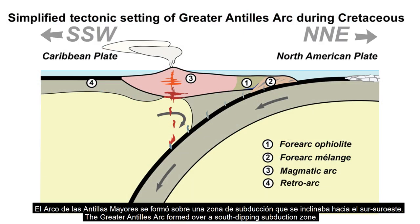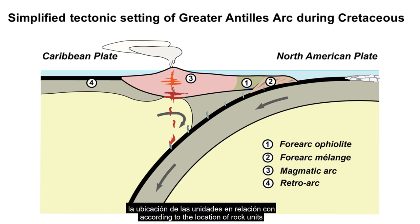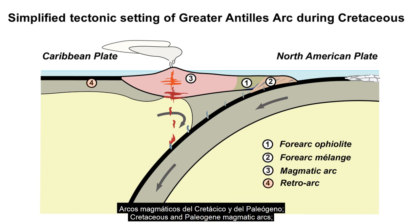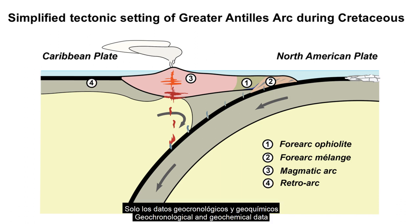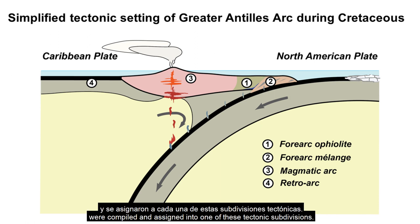The Greater Antilles Arc formed over a south-dipping subduction zone. We identified 4 tectonic settings according to the location of rock units relative to the present position of the magmatic arc. This includes forearc mélange, forearc ophiolite, Cretaceous and Paleogene magmatic arcs, and the retroarc region, which includes both metamorphic and igneous rocks. Geochronological and geochemical data published in the peer-reviewed literature for the Greater Antilles Arc were compiled and assigned into one of these tectonic subdivisions.